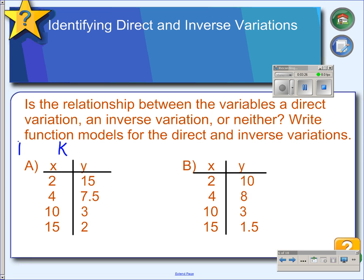So for a direct variation equation, k can be found by dividing y by x. And if you check the whole table and every y divided by its corresponding x value gives you the same answer, it's a direct variation equation. Otherwise, it's not.